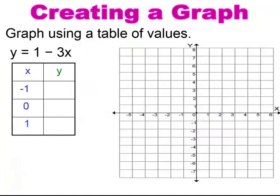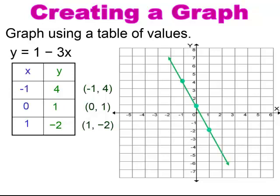Pause and try. In this case, you should have gotten (-1, 4), (0, 1), and (1, -2) as your ordered pairs. You plot the ordered pairs and then draw the line.